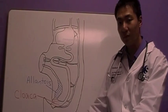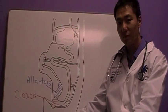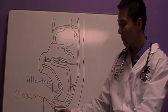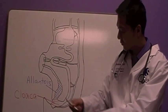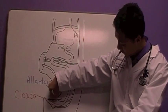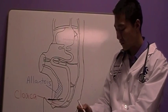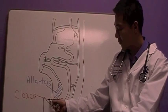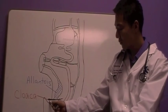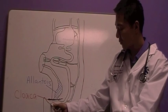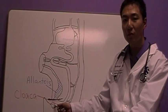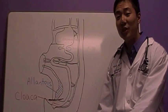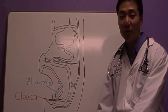Normal embryogenesis of the anus is characterized by termination of the distal hindgut in the cloaca. A urorectal septum then separates the ventral and dorsal cloaca, thus separating the future genitourinary and digestive systems. The anus then develops from an external invagination which deepens toward the rectum. The anal membrane disintegrates, connecting the rectum and external anus. A failure in any of these steps of embryogenesis can result in the imperforate anus.